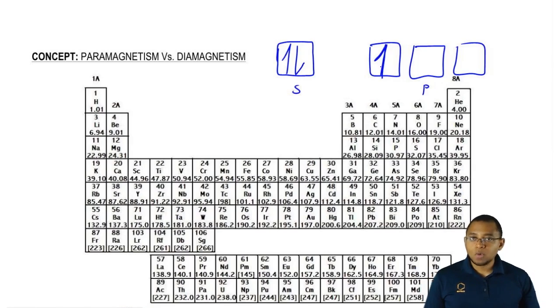Just remember that paramagnetism means you have at least one unpaired electron. Diamagnetism means you have no unpaired electrons.